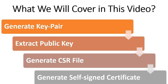I will explain how we can generate a key pair containing a public and private key using OpenSSL. I will explain how we can extract a public key from the key pair using OpenSSL. Then I will explain how we can generate a certificate signing request from the key pair, and finally how we can generate self-signed certificates based on all those steps. So without further ado, let's move to the command line tool.